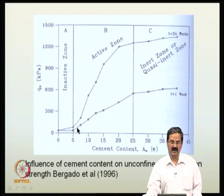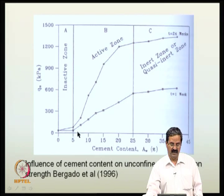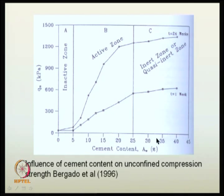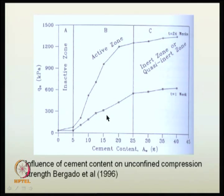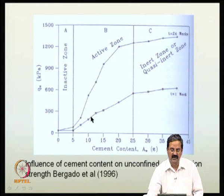An important observation was that the cement content in the range of about 5 percent is an inactive zone — it needs some time. Once you increase to 10 to 15 percent, there is a continuous increase. A cement content in the range of 25 percent could show very active reactions and very strong results, but in the field you may not need that much — 10 percent may be sufficient. You should choose from laboratory results what you need and use that information in design.